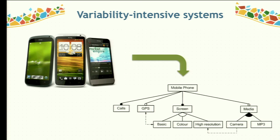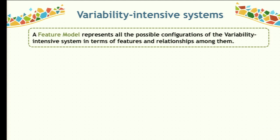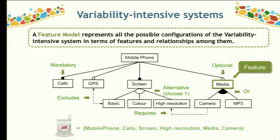In my research context, feature models are really popular for modeling the variability of these systems. A feature model helps to model the variability and represent all the components in a system and the relationships among them. It represents all possible configurations in terms of features and relationships. For example, this is a small feature model representing a mobile phone system, where all the components are represented by features shown as rectangles.